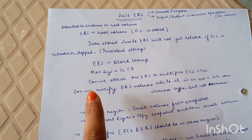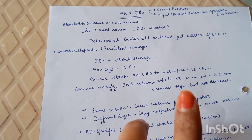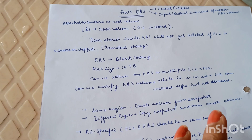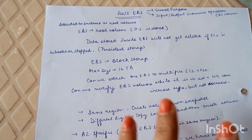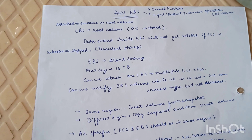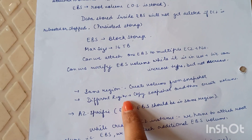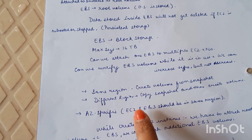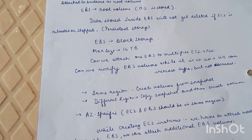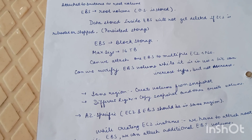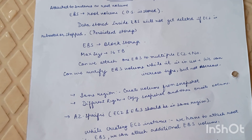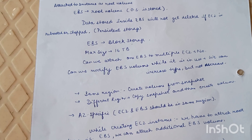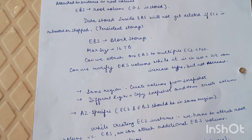Data stored inside EBS will not get deleted if the EC2 instance is rebooted or stopped — that is why it is called persistent storage. If the EC2 instance is terminated, the data might get lost. To attach an EBS volume to an EC2 instance in a different region, you create a snapshot, then create a volume from that snapshot and attach it to the EC2 instance in the target region.